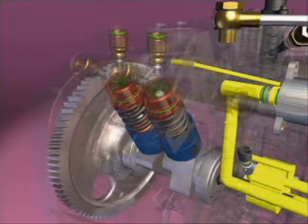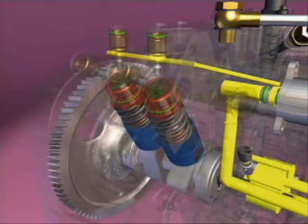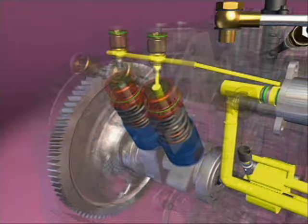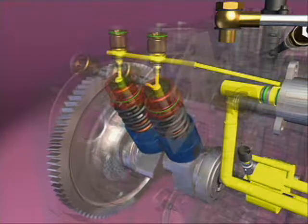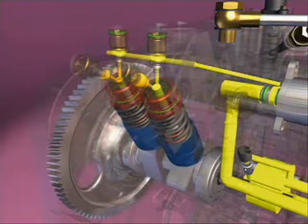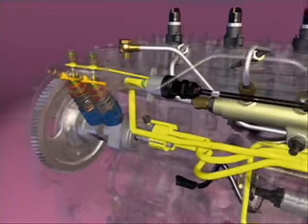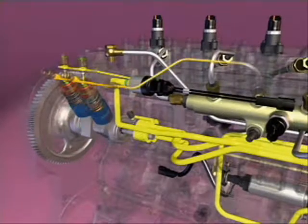In the high pressure pump, the fuel is pressurized by the two cam driven barrel and plunger assemblies. These assemblies create the high pressures needed for injection.